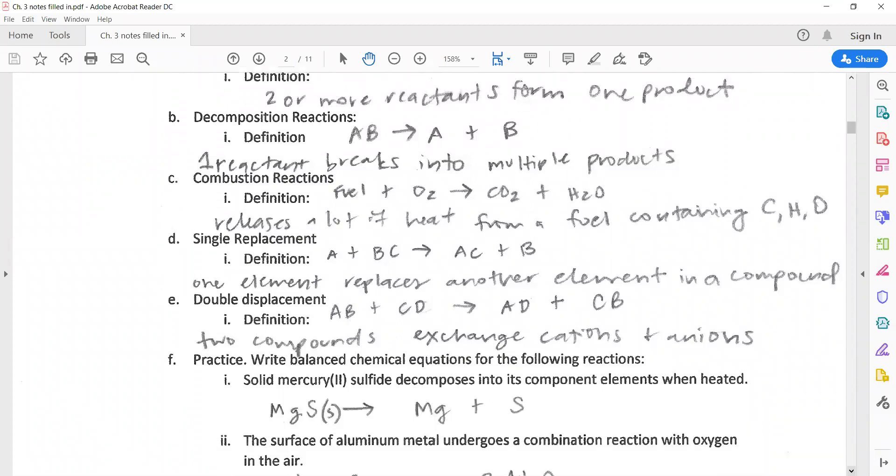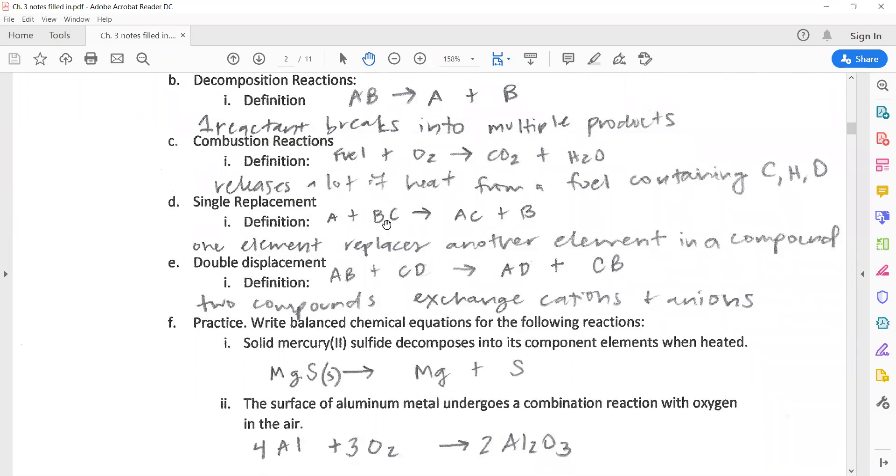Single replacement, what you have here is you have a single element and you have a compound. And what happens is the single element replaces one of the elements in the compound. So A either replaces B or A replaces C. So it kind of just switches who's single. A was single here, but he replaced B. So A and C got together and B got left out. Double displacement or double replacement is when you have two compounds and they exchange. So these are cations and anions and they just switch partners. So A and D go together because A was positive and D was negative. B and C go together, technically in the order CB because C is the cation, B is the anion.